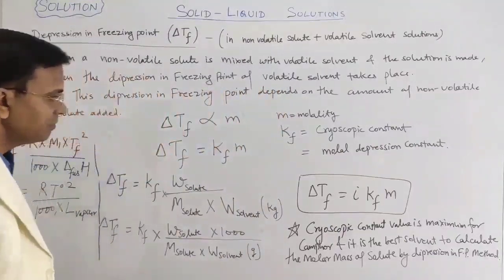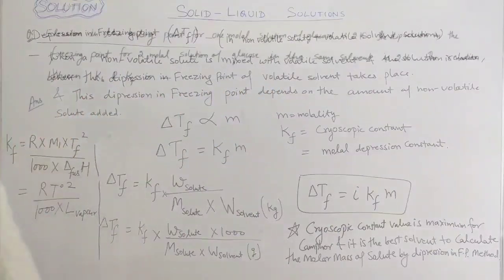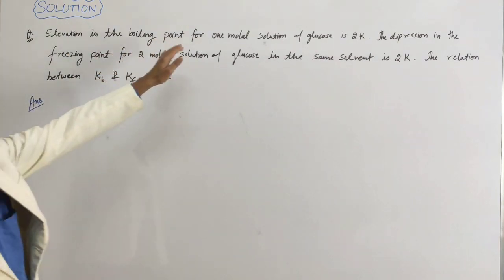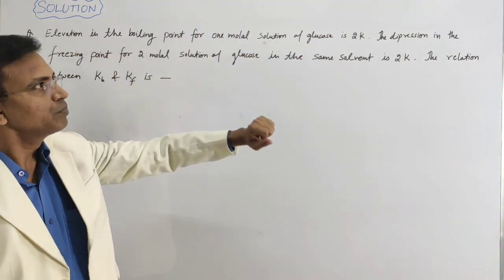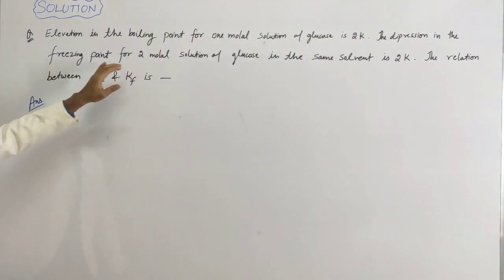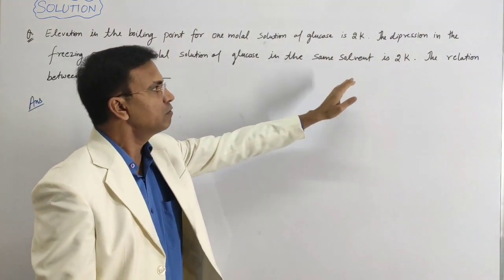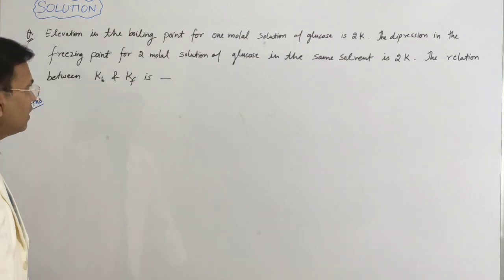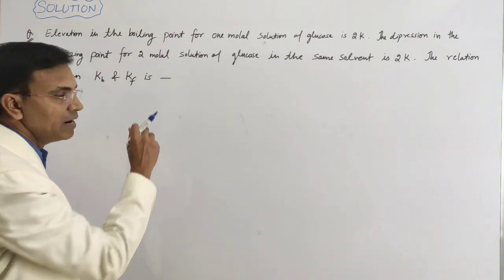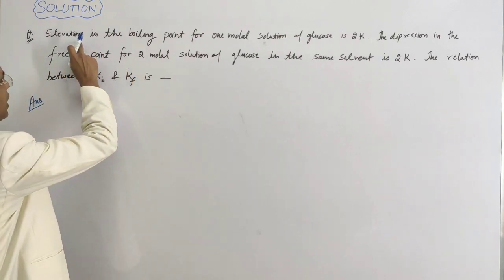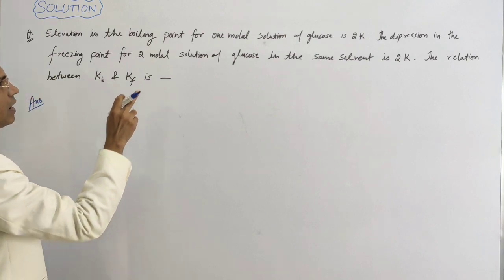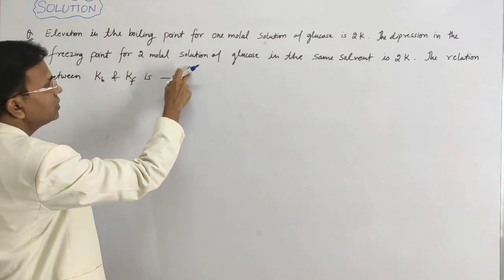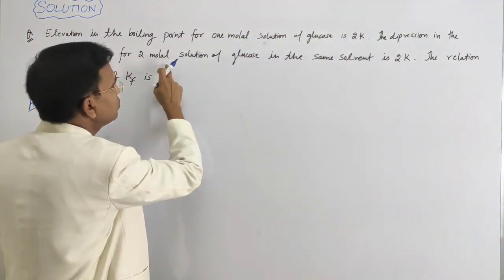Here is a question: the elevation in boiling point for a one molar solution of glucose is 2K. The depression in freezing point of a two molar solution of glucose in the same solvent is 2K. We need to find the relation between Kb and Kf. Given data: delta Tb equals 2K for one molar solution, delta Tf equals 2K for two molar solution.